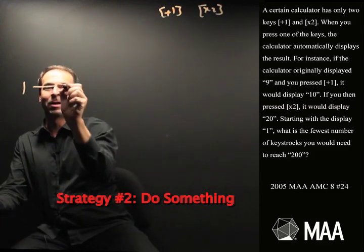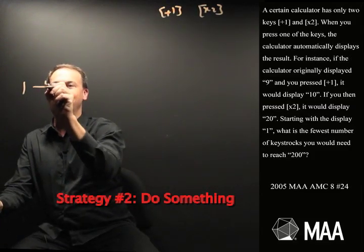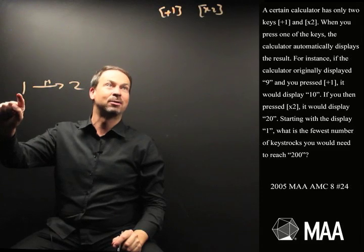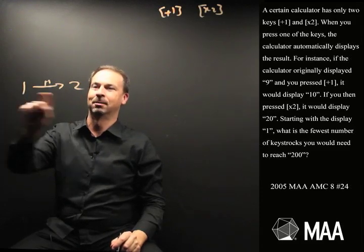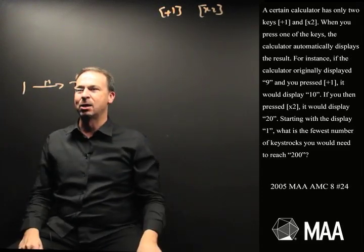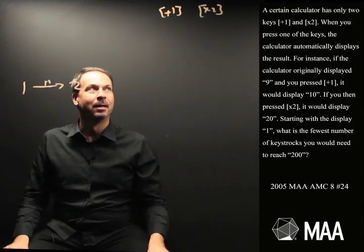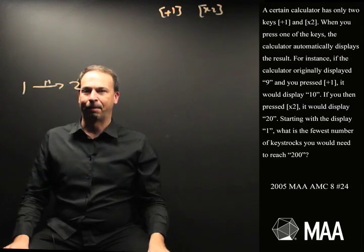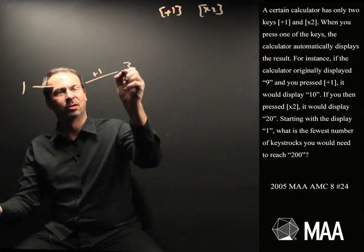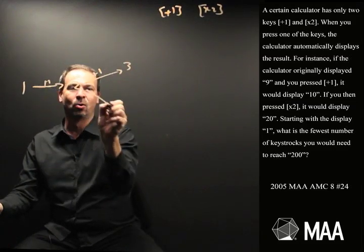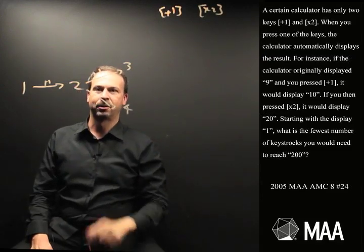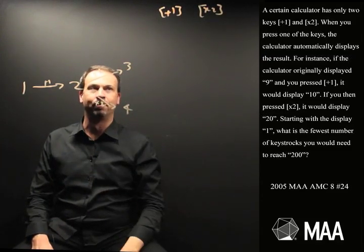Let's play it. If I press the plus 1 button, I get to 2. Or if instead I press the times 2 button, I also get to 2. Either way, you've got to get to 2 as your first step. Next step: plus 1 gets me to 3, or times 2 gets me to 4. So after 2 steps, I'm either at 3 or 4.